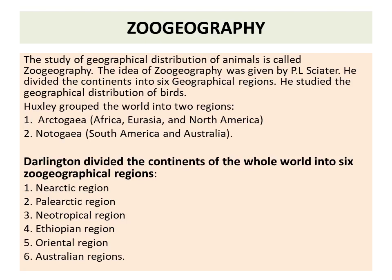The idea of zoogeography was given by Theodore. He divided the continents into six geographical regions and studied the geographical distribution of birds. Darlington also divided the continents of the whole world into six geographical regions: Nearctic region, Palearctic region, Neotropical region, Ethiopian region, Oriental region, and Australian region.